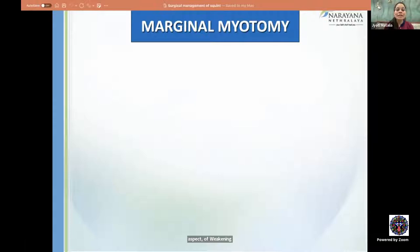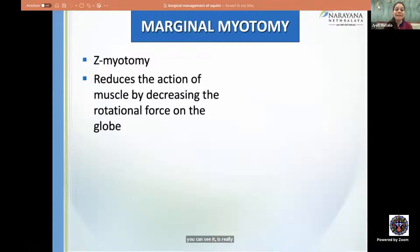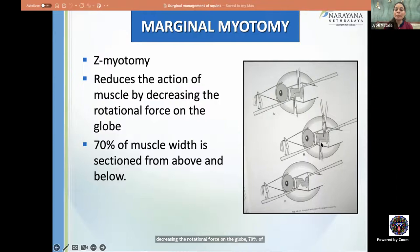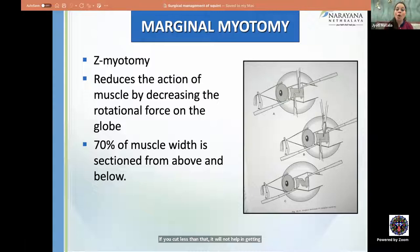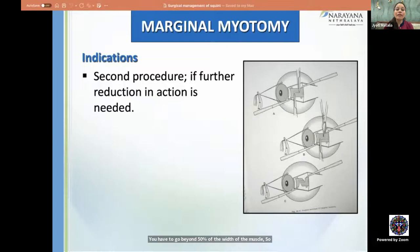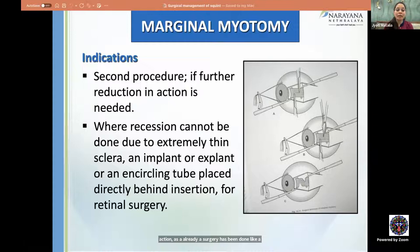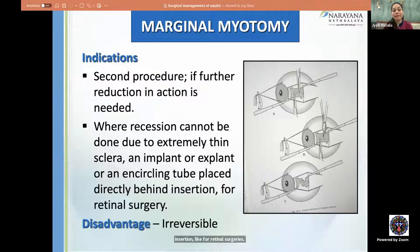Z-myotomy reduces muscle action by decreasing rotational force — 70% of the muscle width is sectioned from above and below in a Z pattern, beyond 50% of the width to achieve effective lengthening. It is indicated when further reduction is needed after a previous recession, when the sclera is thin, or when an encircling implant/explant is present and the muscle needs to be further elongated. The main disadvantage is that it is irreversible.